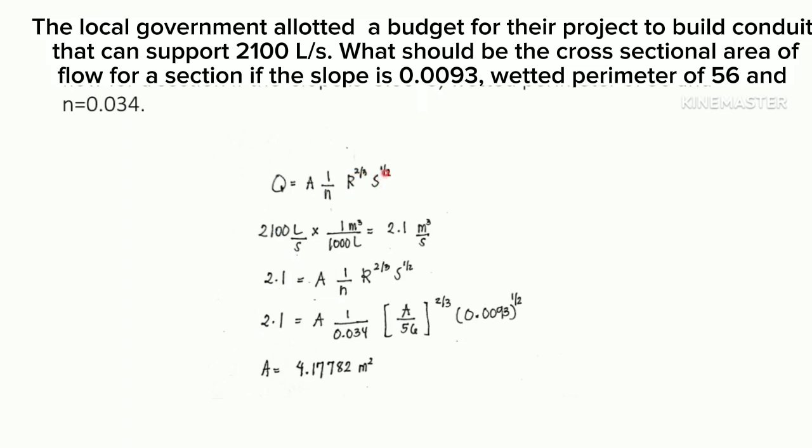We converted the liter into cubic meter. One cubic meter is equal to one thousand liters, so 2100 is 2.1 cubic meters per second. So we can use this constant for the discharge: 2.1 equals to A times one over the roughness, which is 0.034.